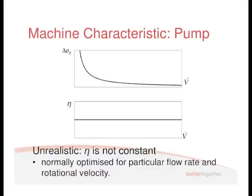So at very low flow rates, we've got a very high pressure. And as the flow rate increases, the pressure rise approaches zero. And we're assuming that efficiency is constant. So it doesn't matter what the flow rate is. Again, the efficiency is constant.